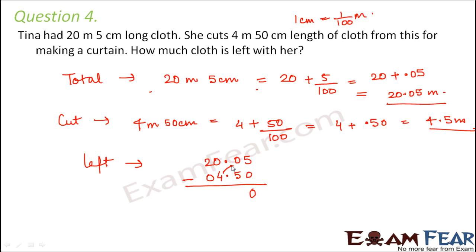Borrowing makes it 10, so 10 minus 5 is 5. We give back 1, so 4 plus 1 becomes 5. Next, we have 0 on top so we borrow again — 10 minus 5 is 5. Give back 1, so 2 minus 1 is 1. The result is 15.50 meters.